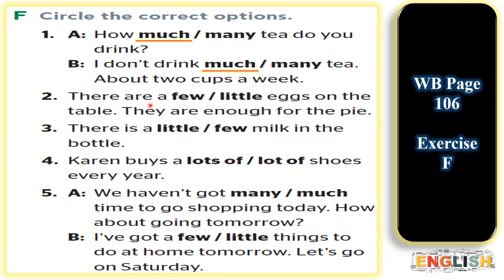So 'much', 'little', and 'a little' are followed by uncountable nouns. Quantifiers that are used with countable nouns are: 'many', 'few', 'a few'. Example 1: There are many tables in this room — note that the quantifier 'many' is followed by the countable noun 'tables'.